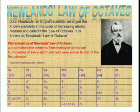Newlands' Law of Octave. In 1866, John Newlands, an English scientist, arranged the then known elements in the order of increasing atomic masses. He started with the element having the lowest atomic mass, hydrogen, and ended at thorium, which was the 56th element.